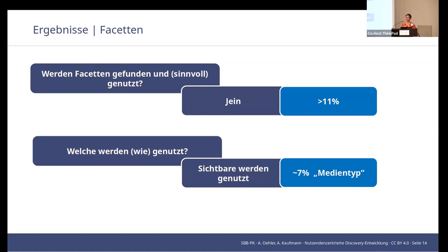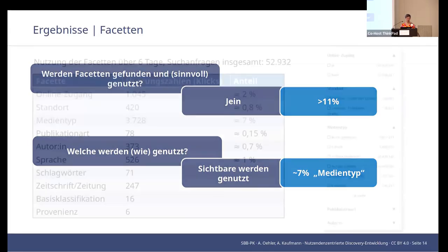At first, users tend to ignore the facets. But once they do use them, it works quite well — at least for those that are opened and seen right away. Because you also have to scroll, and the ones at the bottom are not found as easily. Of the facets used, the majority — 7% — is the item type. Others are used less.